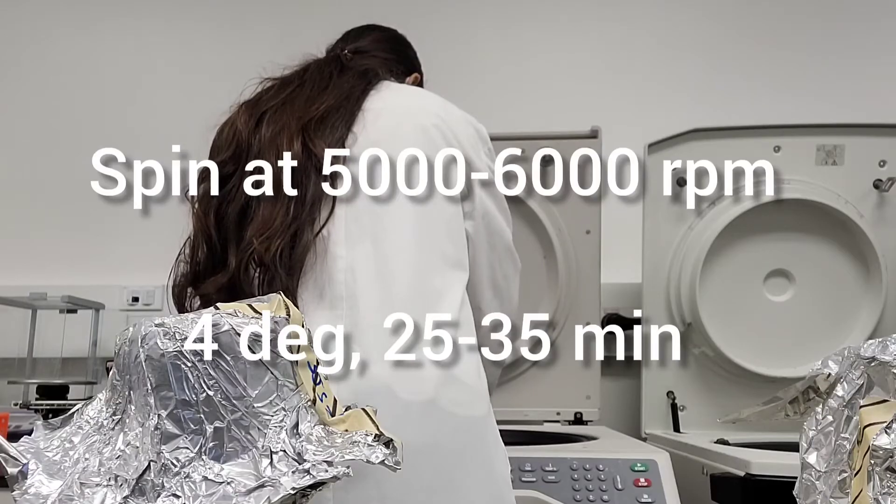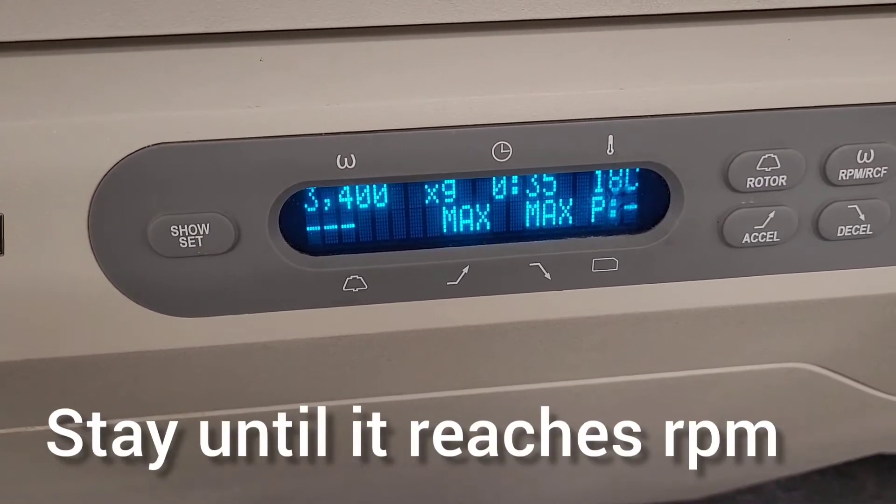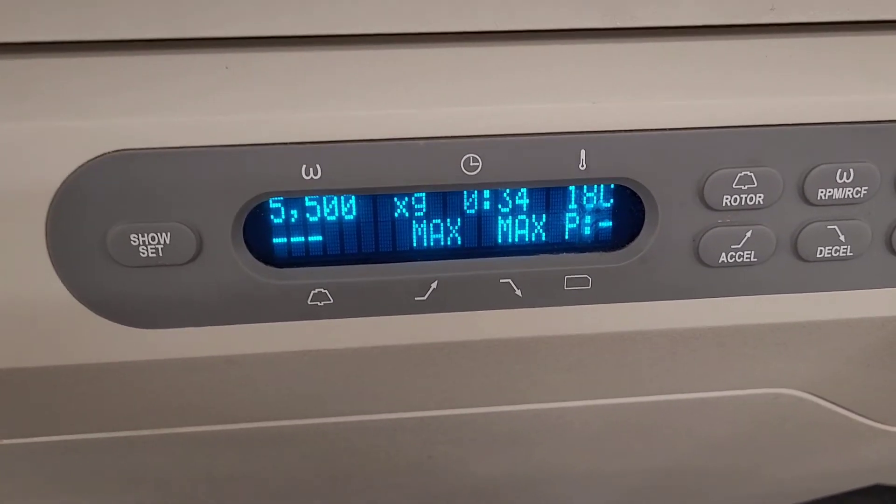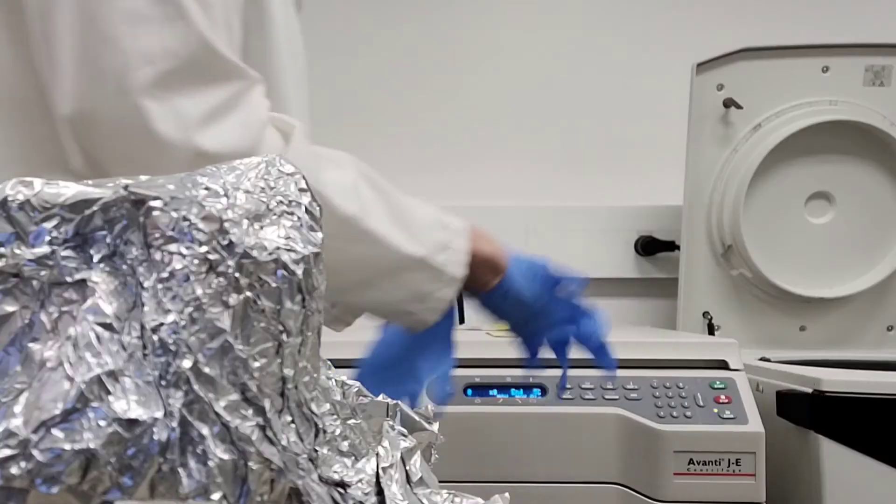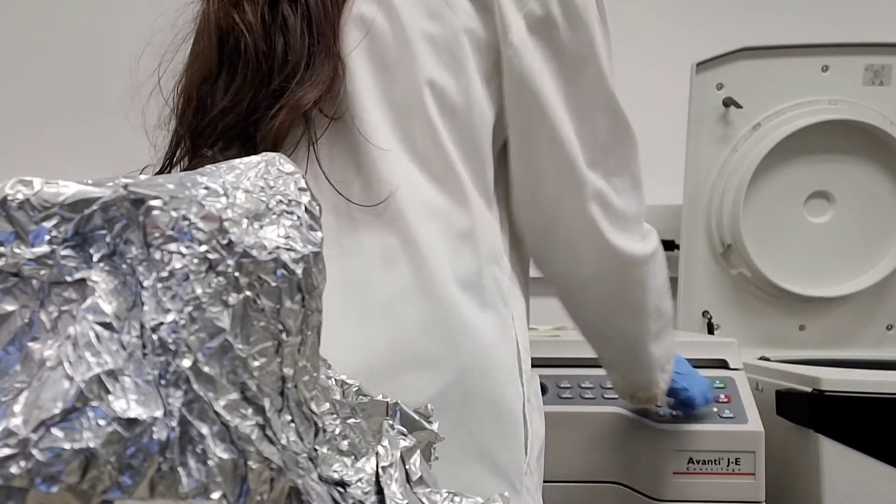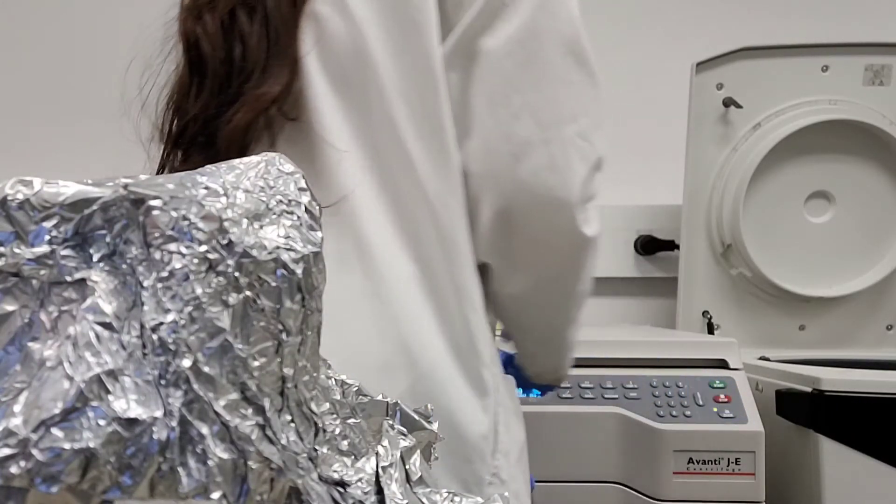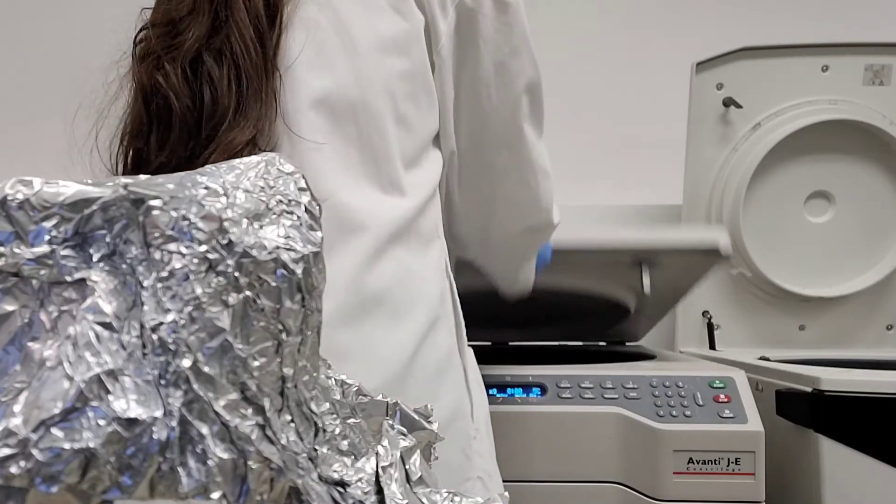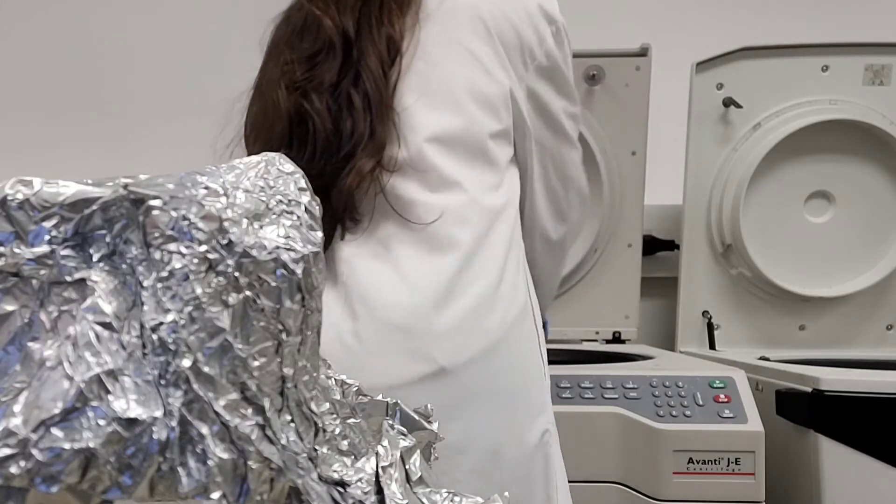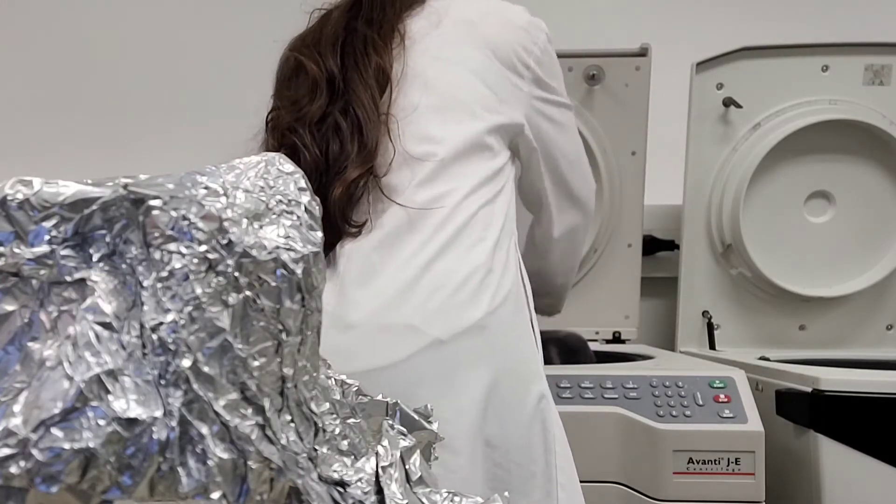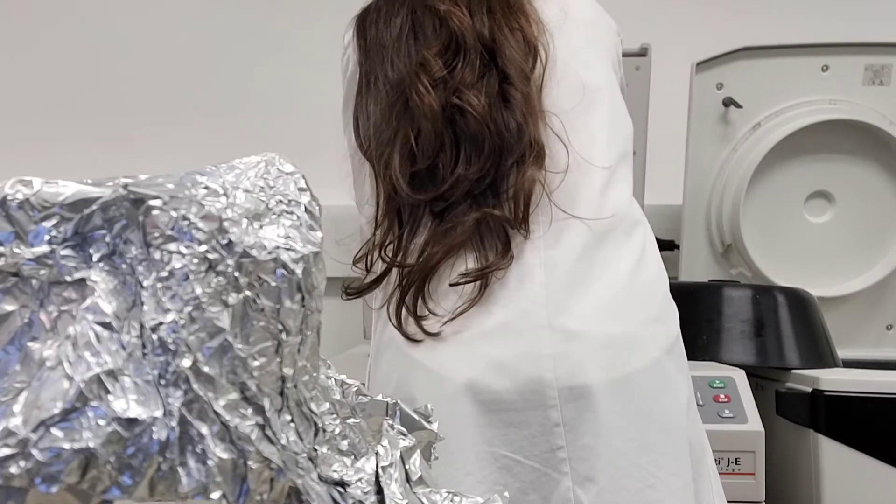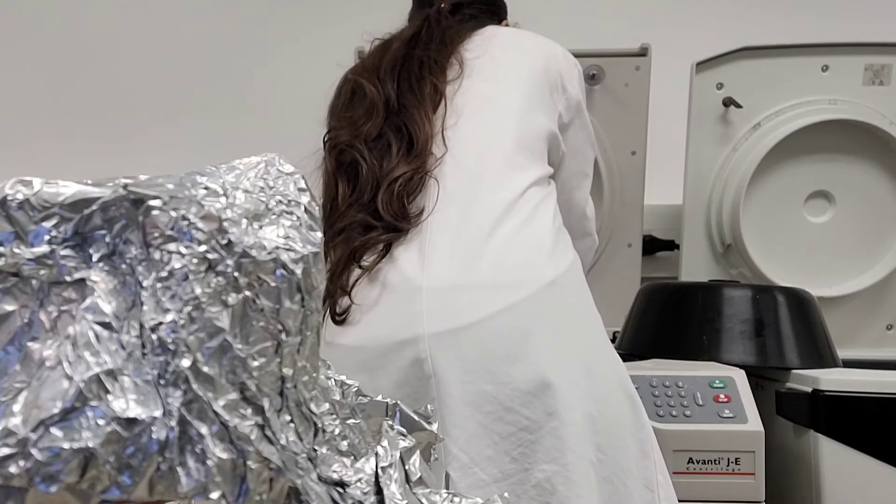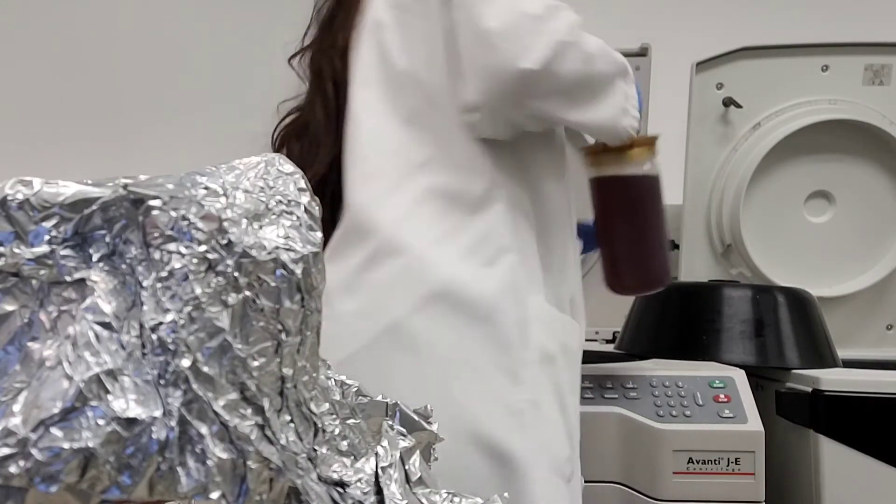Then spin it for 5500 rpm, about 35 minutes at 4 degrees. You want to stand there until the rpm reaches the selected 5000 something or 6000, whatever you select. Just make sure it reaches that and then you can walk away. After 35 minutes it's finished, you take them out.